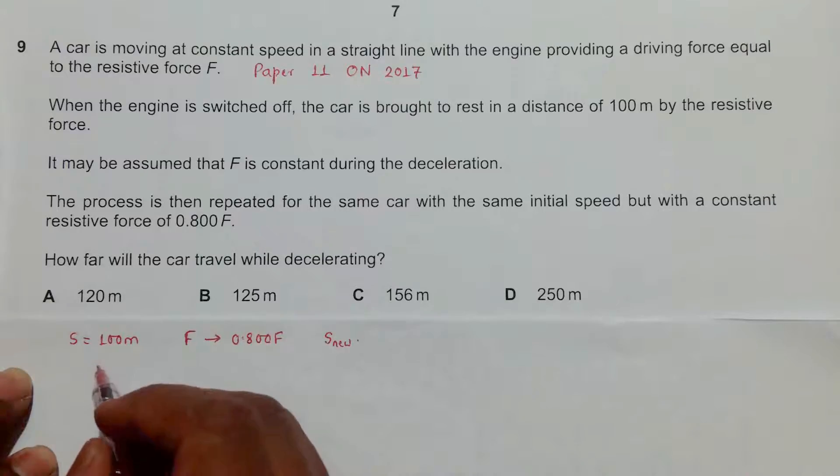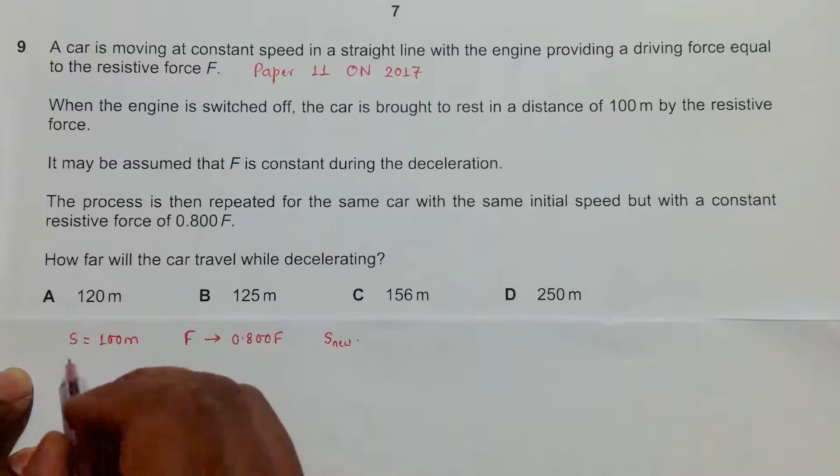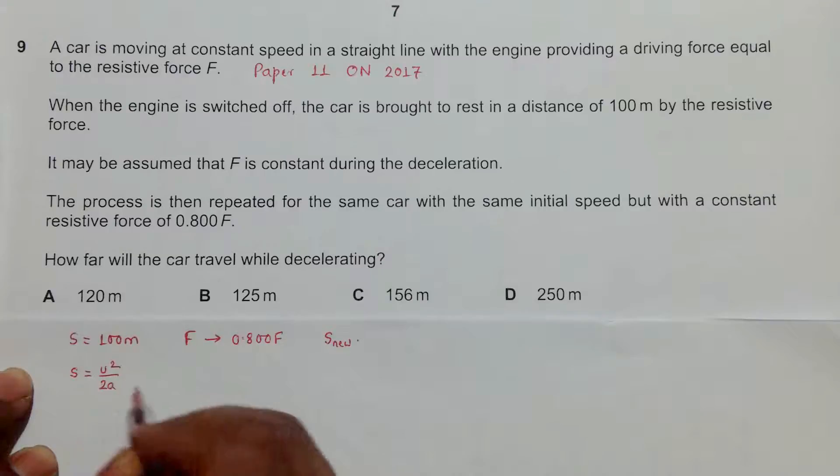It is to be noted that when a car is brought to rest by a certain force, the braking distance is given by u squared by twice a, where u is the velocity before applying the brakes and a is the value of the retardation.